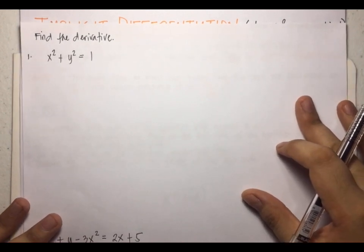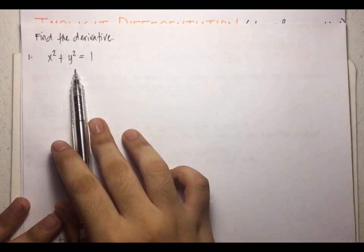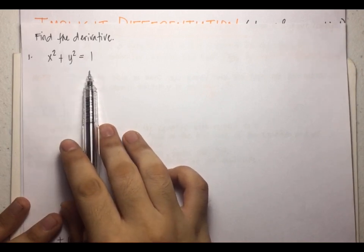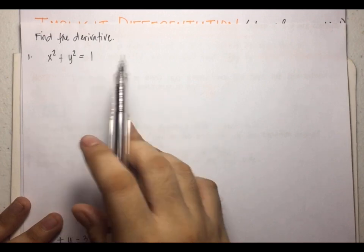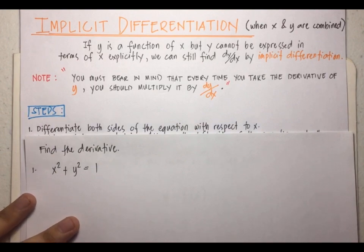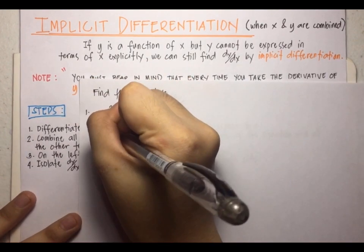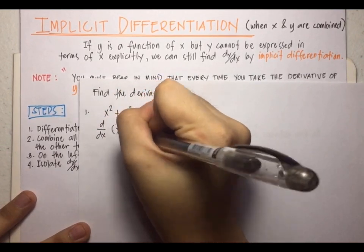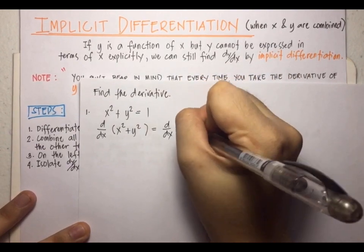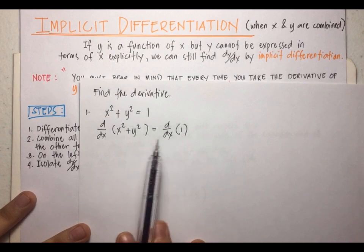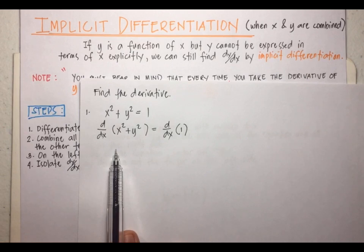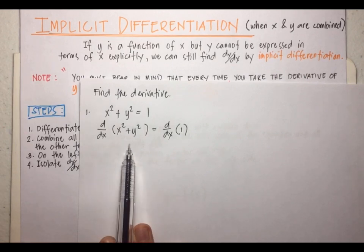Example number one: find the derivative of x² + y² = 1. In this problem, x and y are on the same side, so this is an implicit function. Following step one, we differentiate both sides with respect to x: d/dx(x² + y²) = d/dx(1). This means we need to take the derivative of each term.